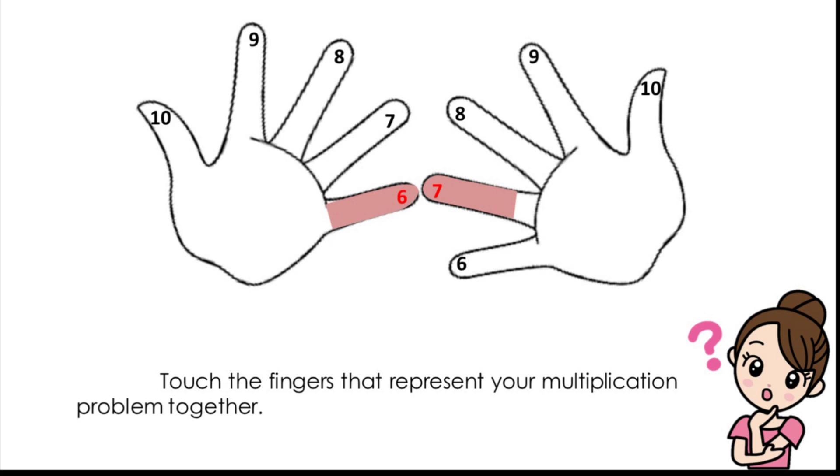Again, remember that each finger represents a number, and that in this case, your ring finger represents 7 and your pinky represents 6. Therefore, you need to touch these together to solve this math problem.